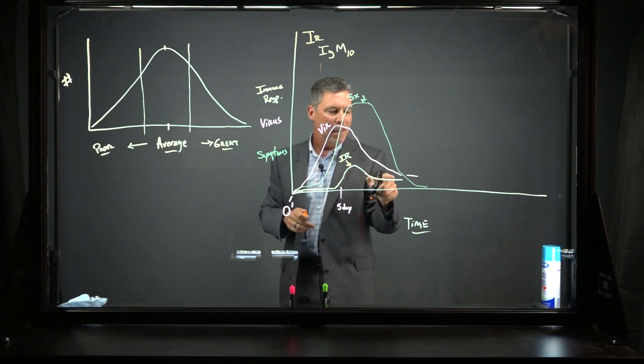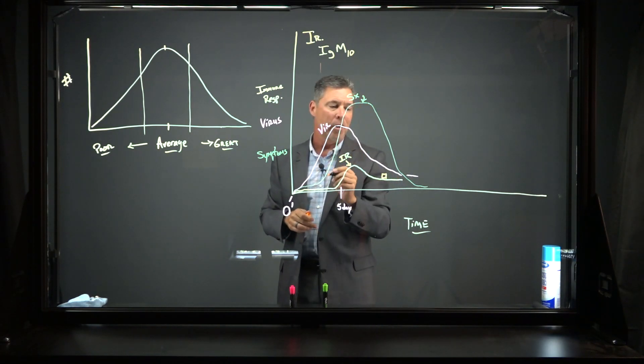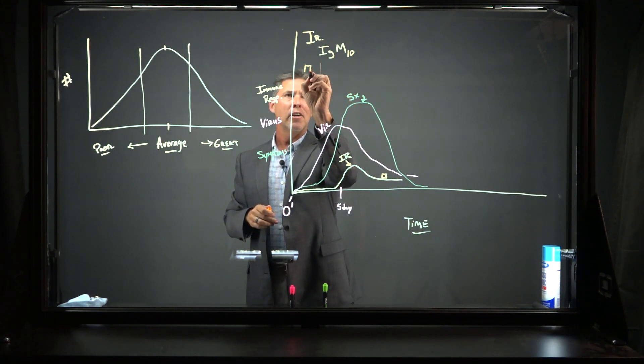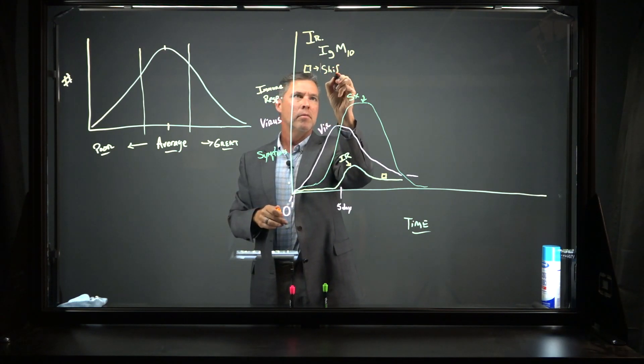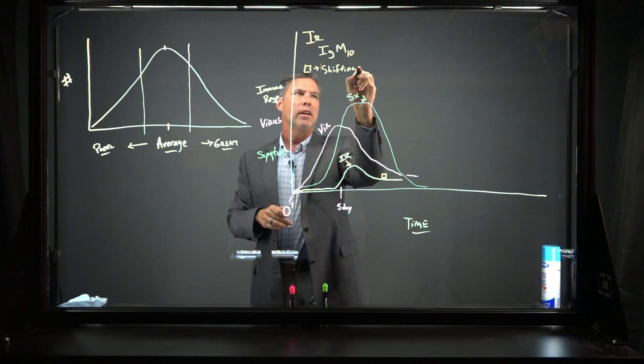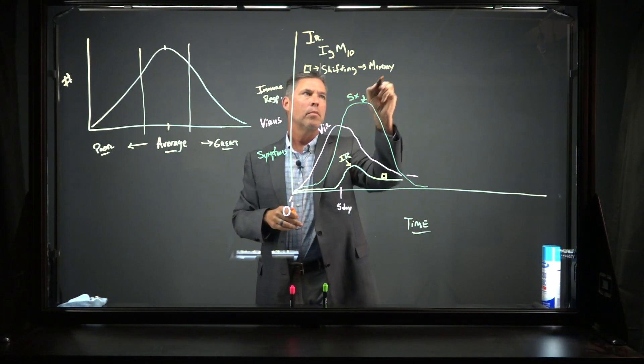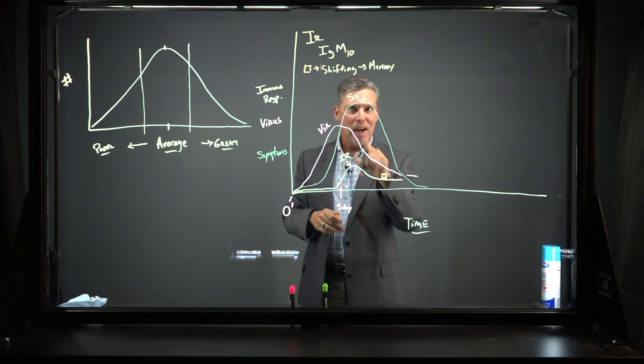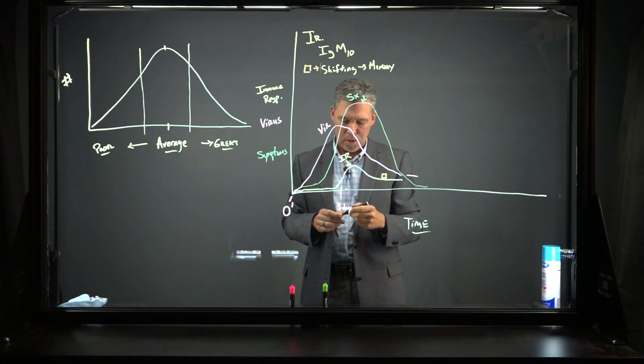That immune response is dominated by IgM. But what happens late in the immune response, out here, I'm going to put a little box, what's happening right here is that your body is shifting away from actively fighting the virus to making memory. Right here, about this time, and it's about time all the symptoms go away and most of the viral load has come back down.